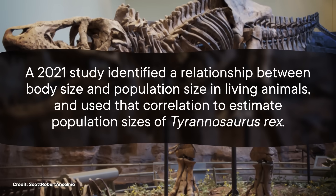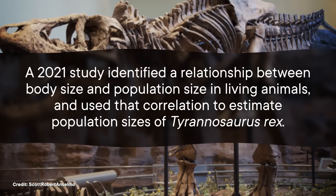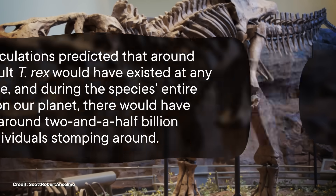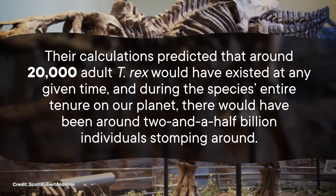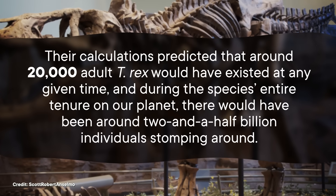Or you can go further and try to figure out population sizes for extinct animals based on what we know about present ones. A 2021 study identified a relationship between body size and population size in living animals, and used that correlation to estimate population sizes of Tyrannosaurus rex. Their calculations predicted that around 20,000 adult T. rex would have existed at any given time, and during the species' entire tenure on our planet, there would have been around 2.5 billion individuals stomping around — which is way more than the number of T. rex fossils we've ever found. As of this video, there's like 30. Naturally, there's probably a big margin of error on these estimates given how many variables are involved.